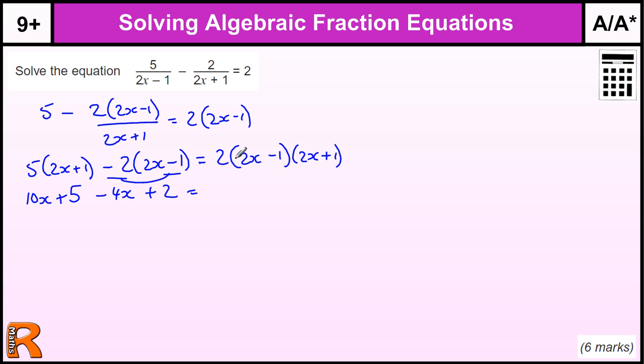Multiplying this out, it's a difference of two squares. These plus 1 and minus 1 means the middle bit's going to cancel, and you're just going to end up with two lots of 2 times 2x is 4x squared, and minus 1 times 1 is minus 1.